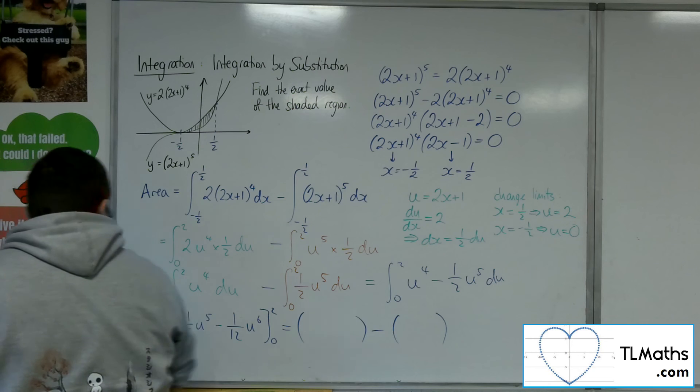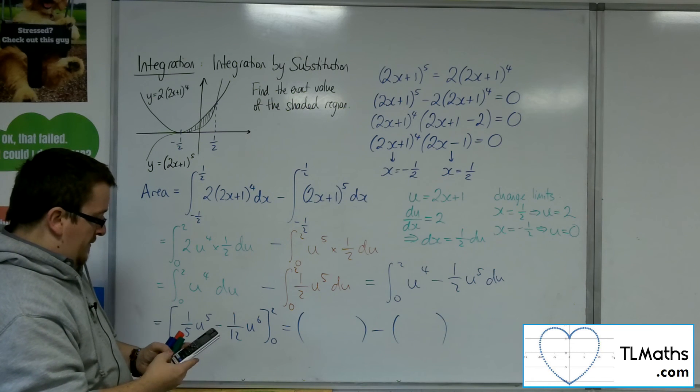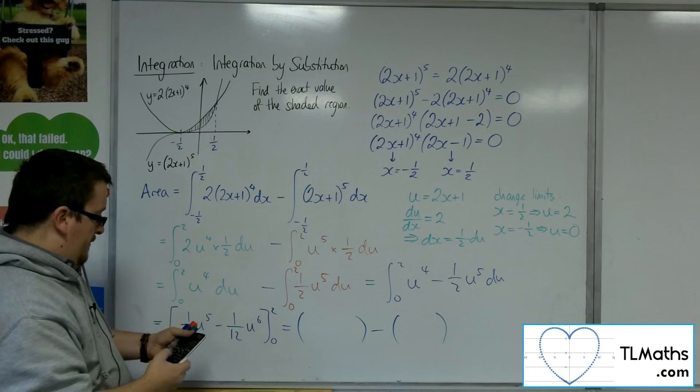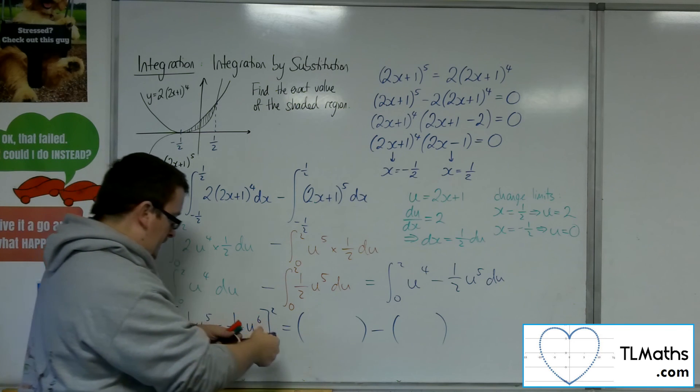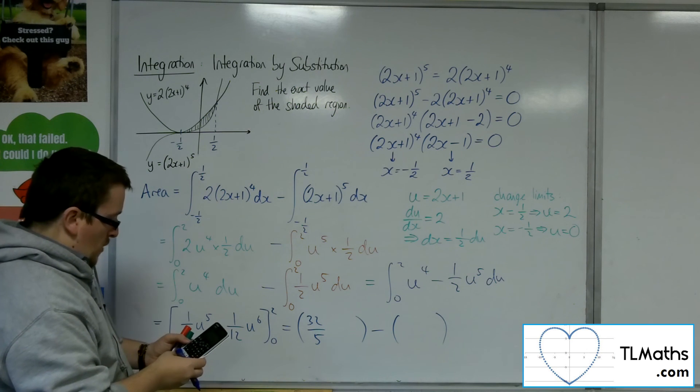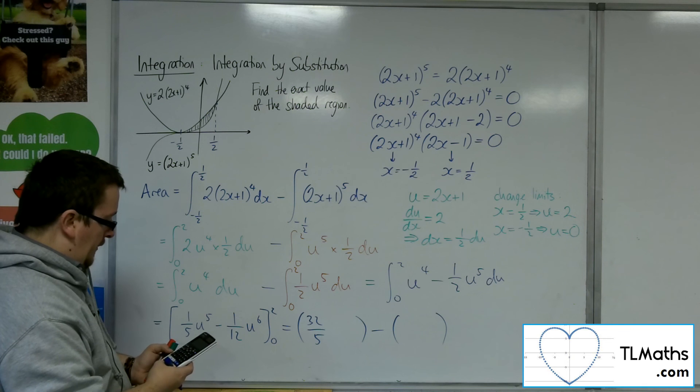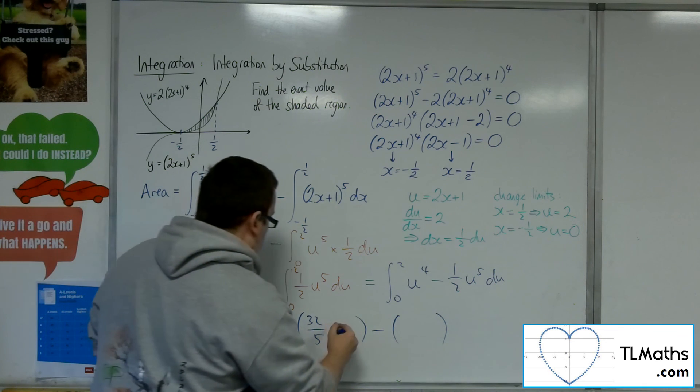So substituting in 2 to start off with. So 2 to the power of 5 divided by 5. So 32 fifths. And then we've got 1 twelfth of 2 to the power of 6. So that would be 16 thirds.